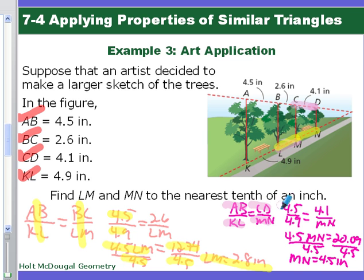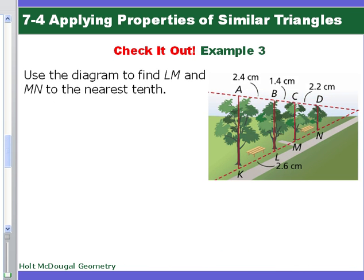To find MN, we're going to use segment CD instead. So we know AB is to KL as CD is to MN. Fill in our values, cross-multiplied, 4.5 MN is equal to 20.09, divide, and you find that MN is about 4.5 inches. Very nice. And here's your check it out. Use a diagram to find the length of LM and MN to the nearest tenth.